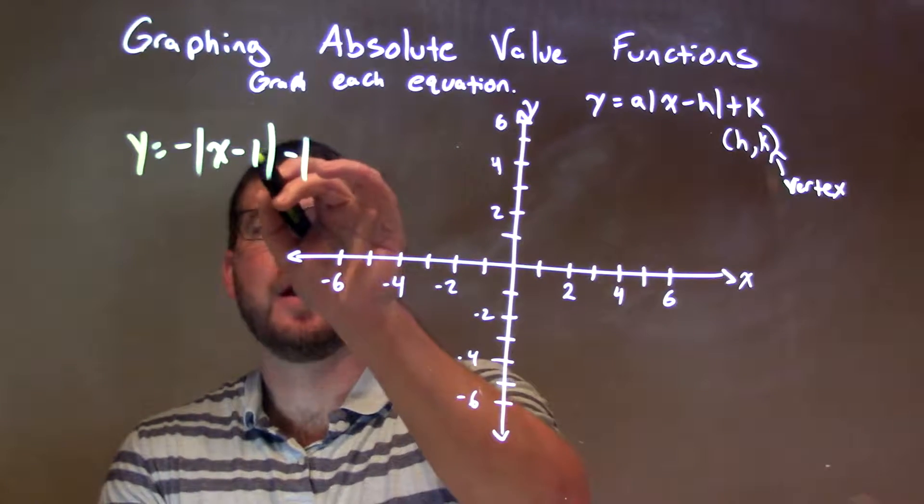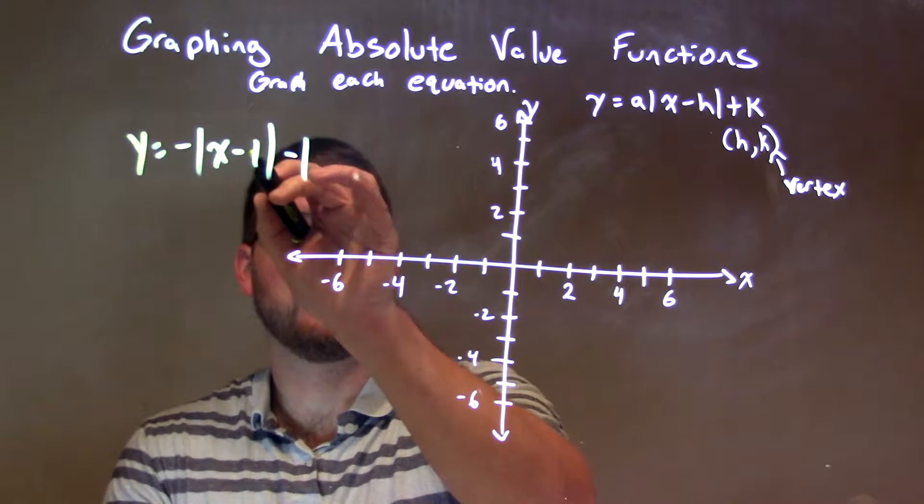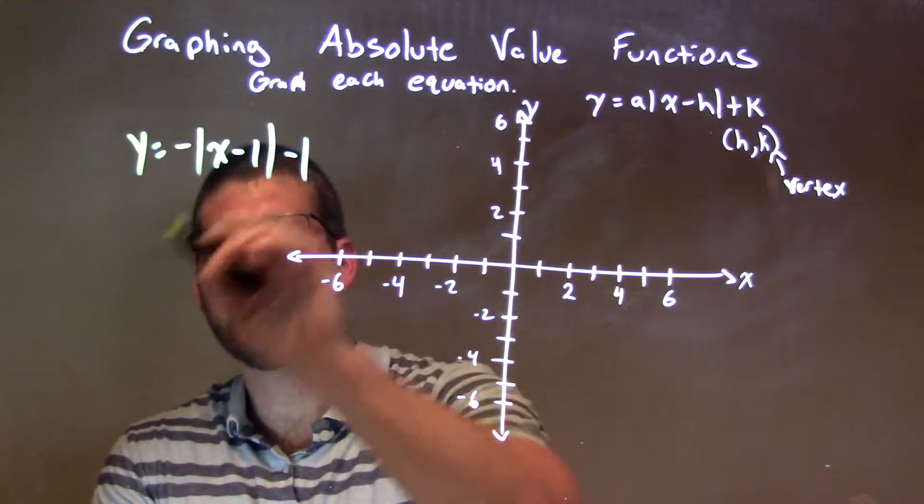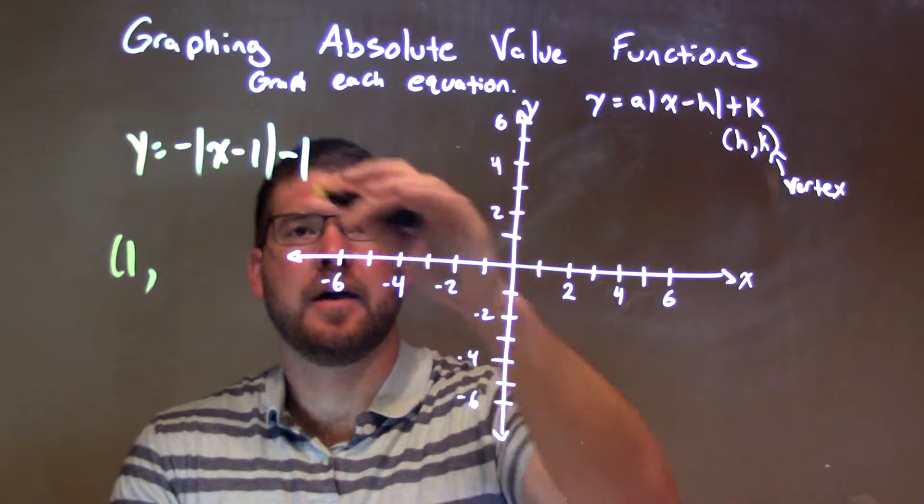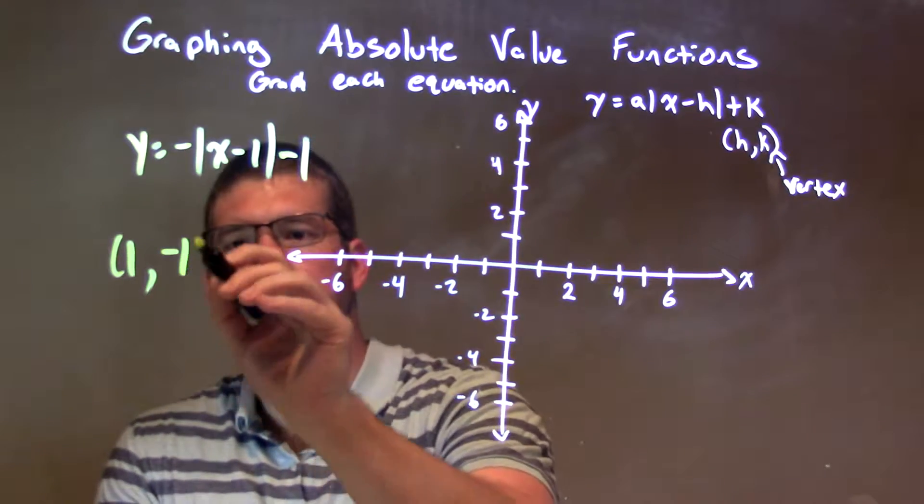Okay, vertex here. X minus 1 right here, the positive 1 is our h value. Remember the k value is plus k, so we have a negative 1. So we have a negative 1 right there.